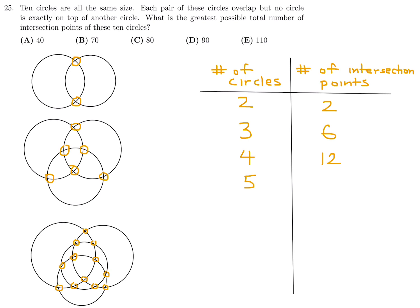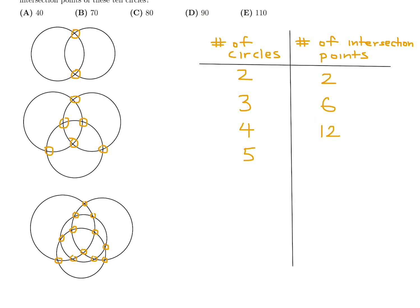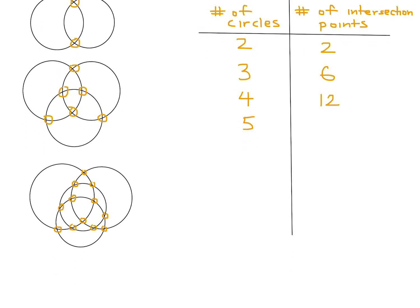So I'm going to do one more. And my hope is that with five, I can see a pattern. I'll just continue in the same way that I've been drawing the circles. I've got to draw a fifth one. I'm pretty sure that maximizes it. Let's see here. One, two, three, four, five, six, seven, eight, nine, ten, eleven, twelve, thirteen, fourteen, fifteen, sixteen, seventeen, eighteen, nineteen, twenty. And I definitely don't want to draw another circle here.